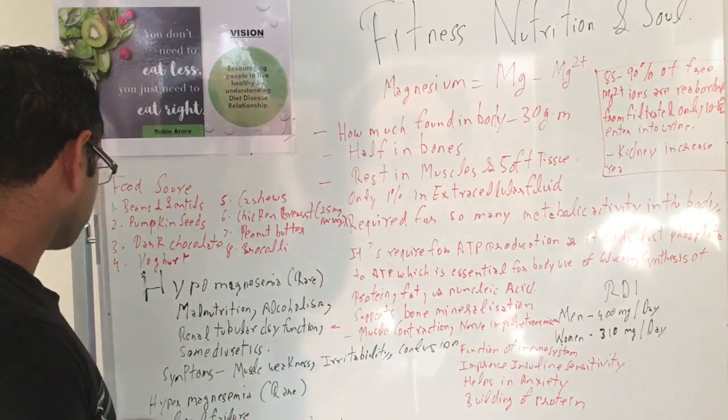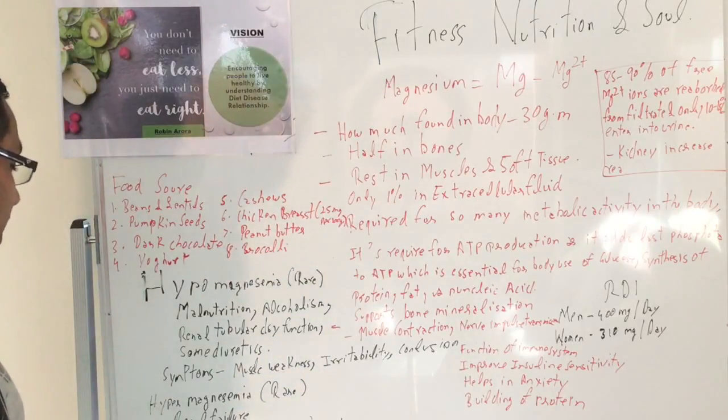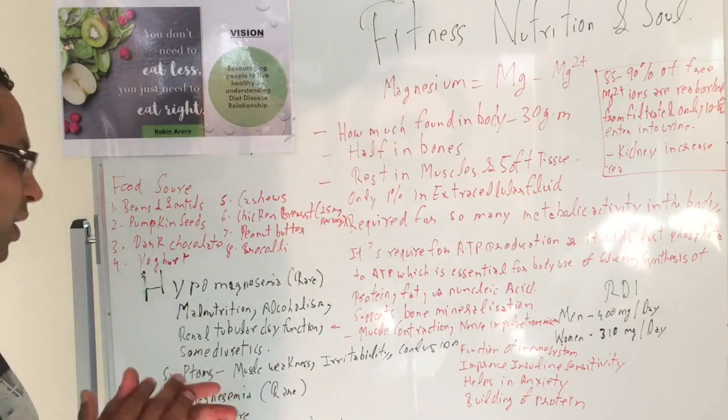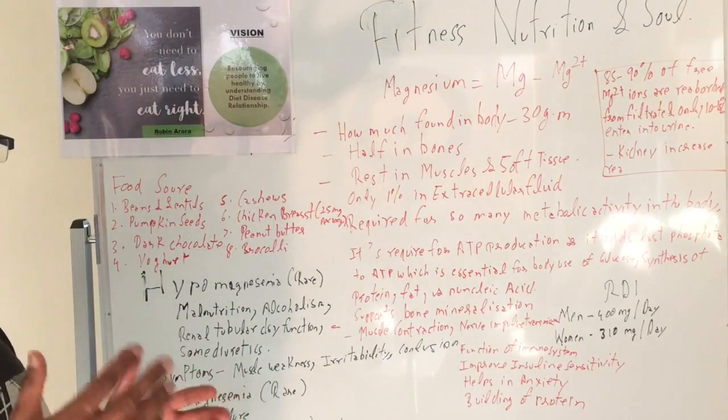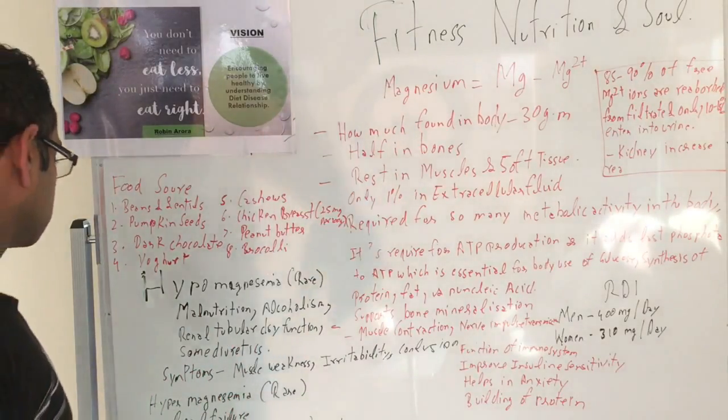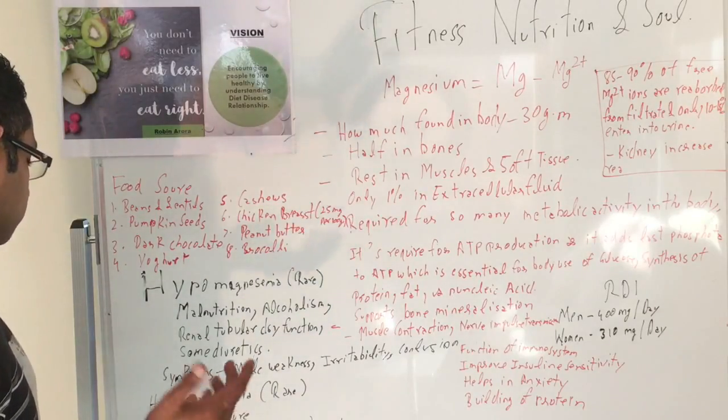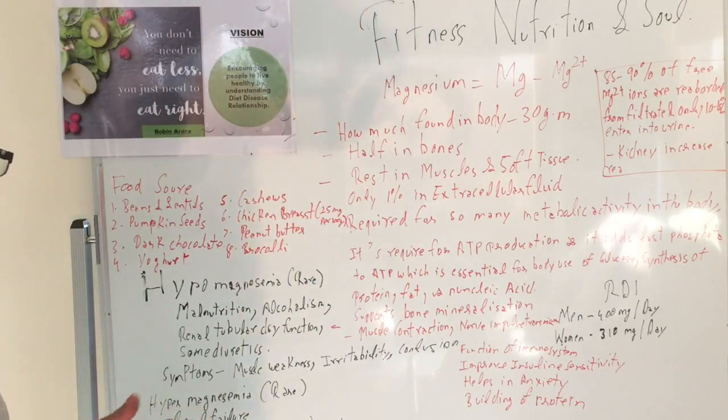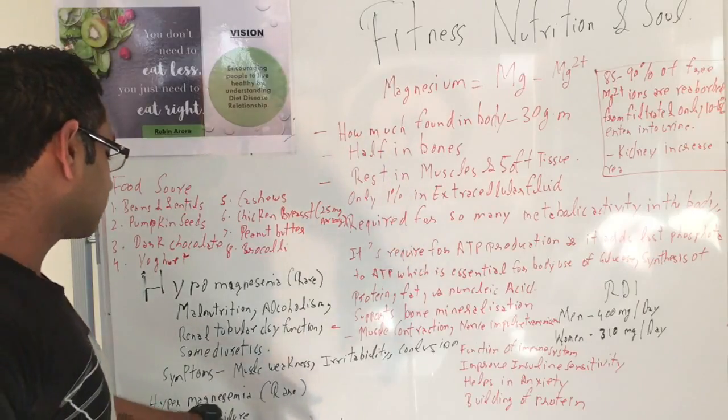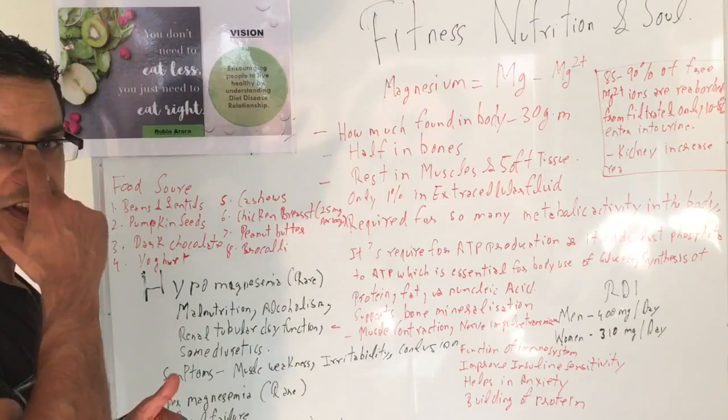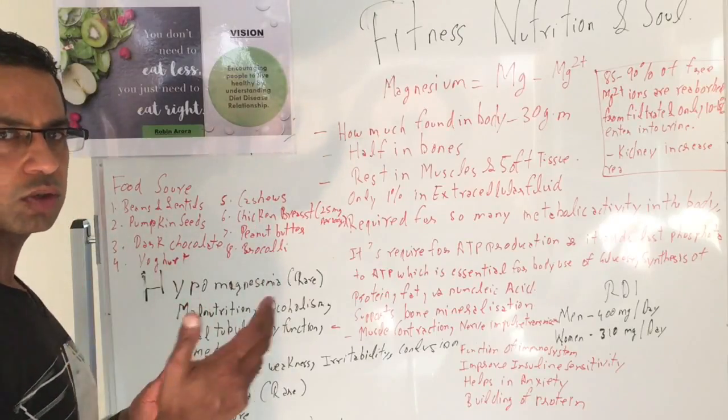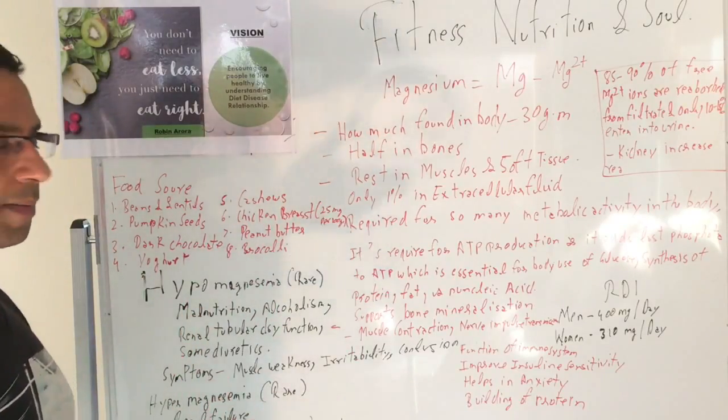Then the next one is hypermagnesemia, which is again very rare. Generally if you're abusing supplements in a large dose for months, that can cause it too, and also renal failure and magnesium-containing antacids. And also laxatives as well - some of these, if you're taking very strong laxatives which are rich in magnesium, they can also start building up in the body. The symptoms are nausea, vomiting, hypotension, and reduced respiration - that means reduced breathing.